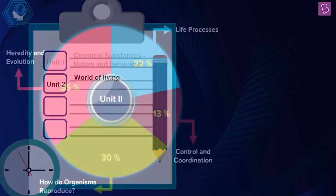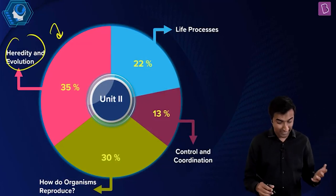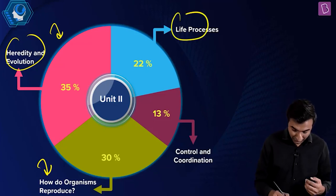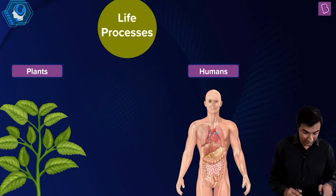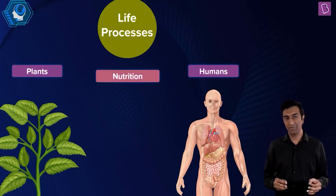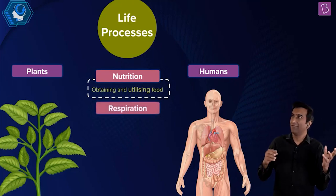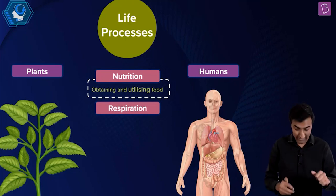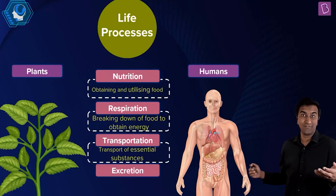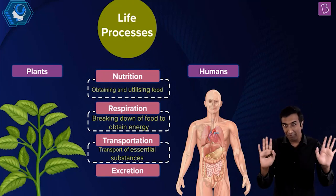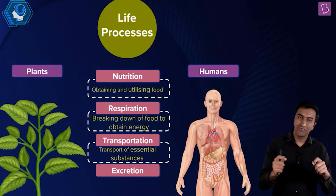The next unit is the World of Living — basically biology. This is the weightage of different chapters: heredity and evolution at 35% — very heavy. Reproduction has a good percentage, then life processes, then control and coordination. Life processes: look at the body as a machine. What do you need for a machine to survive? Fuel — nutrition. That nutrition needs to produce energy through respiration. That energy goes to all different parts of the body. Transportation. And what you don't need, you throw out — excretion. Form these maps in your head and biology becomes much easier.